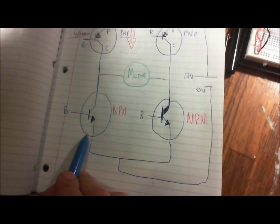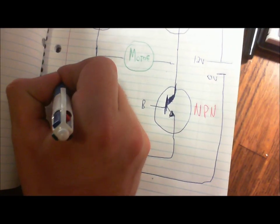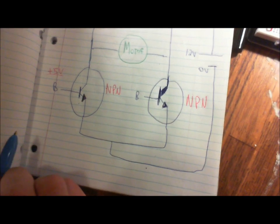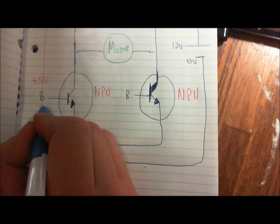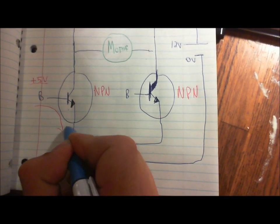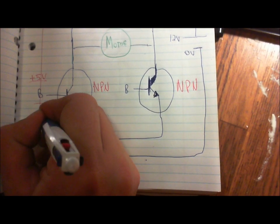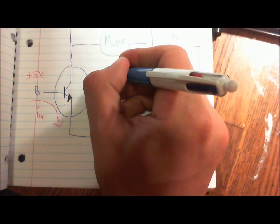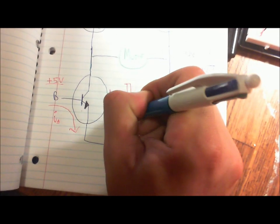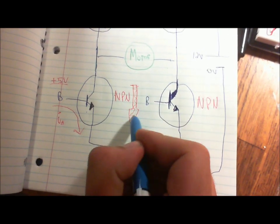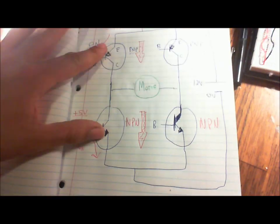Now the NPN transistors are a little bit different in that we're getting 5 volts from the Arduino. That's our microcontroller for this project. And so this current is flowing into the system here, like that. A small current, about 20 milliamps. Okay, so that's the current from the Arduino. And this current also lets a larger current flow down.